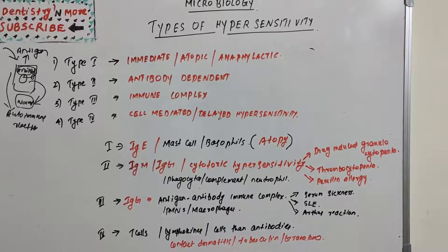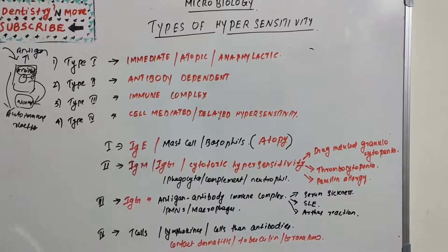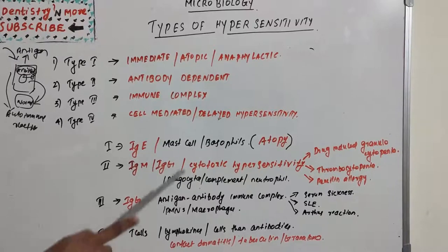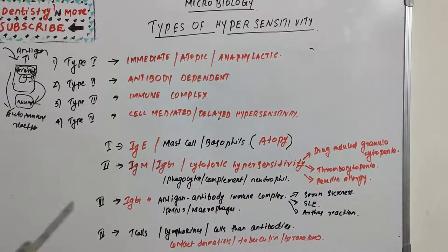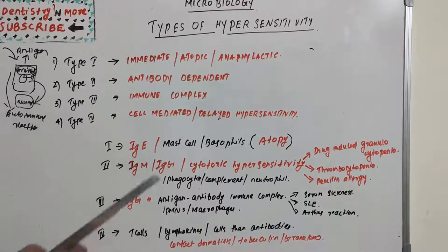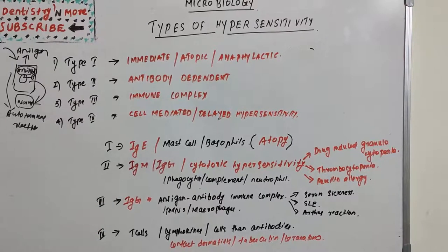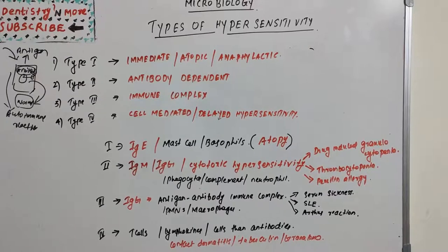The immediate type is usually mediated by IgE antibody to specific antigens. The primary cellular components in this hypersensitivity are mast cells and basophils, and the reaction is amplified or modified by platelets, neutrophils, and eosinophils. Mast cells get stimulated and release histamines. An example of Type 1 is atopic reactions, which is a type of localized anaphylaxis — in these patients there will be higher levels of IgE antibodies.